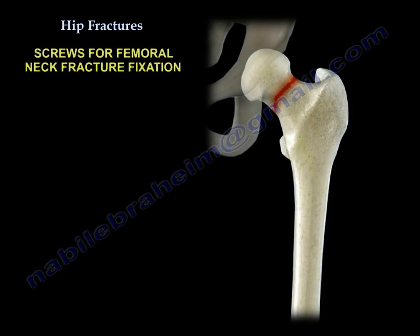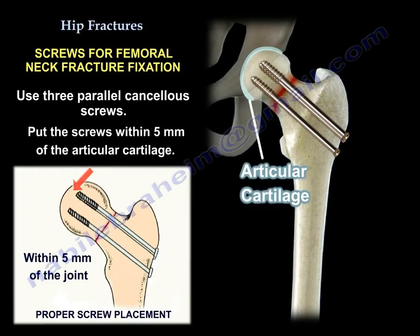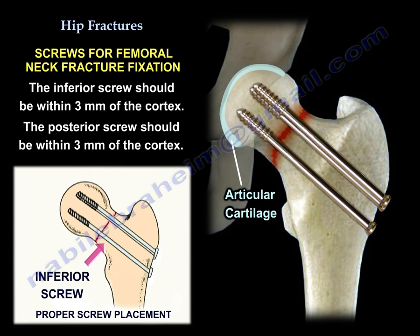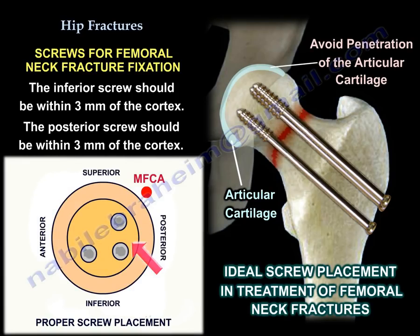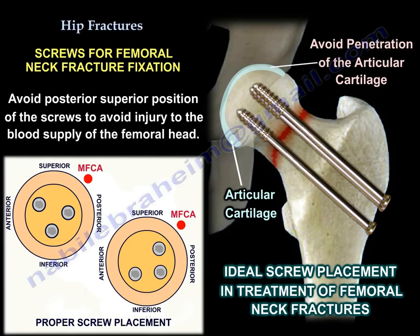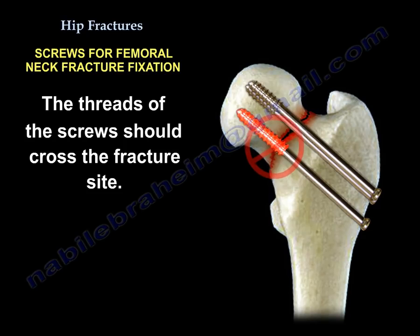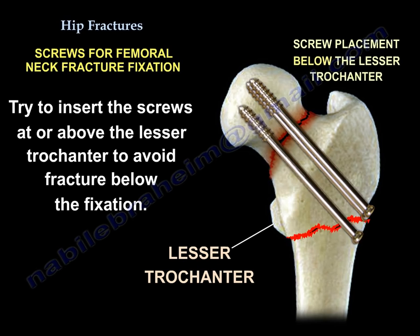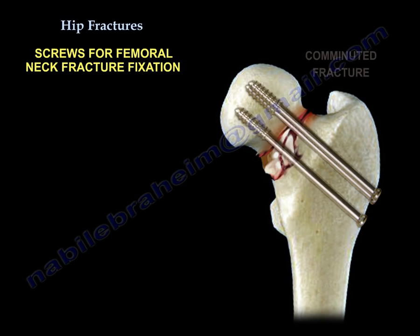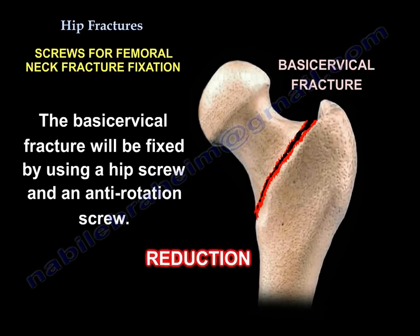For femoral neck fracture fixation, use three parallel cancellous screws. Screws should be inserted 5 millimeters from the articular cartilage. The inferior screw should be within 3 millimeters of the cortex, and the posterior screws within 3 millimeters of the cortex. Avoid a posterior-superior screw position to prevent injury to the blood supply of the head — inferior and posterior screws are preferred. The screw threads should cross the fracture site. Try to insert them above the lesser trochanter to avoid fracture below the fixation. If the neck is comminuted, add a fourth screw. A basal cervical fracture should be fixed with a hip screw and an anti-rotation screw.